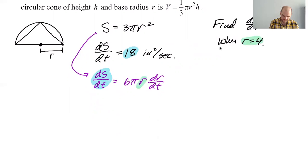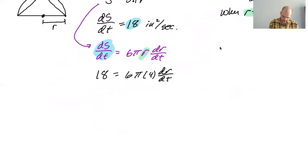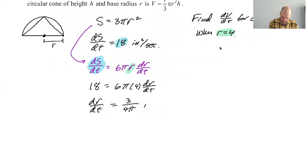So 18 equals 6π times 4 dr/dt. So dr/dt - 18 divided by 6 is 3 - then 3 over 4π. And dr/dt should be in inches per second.